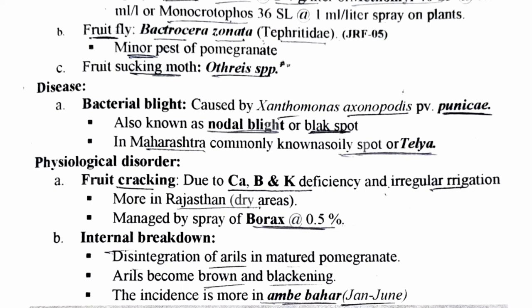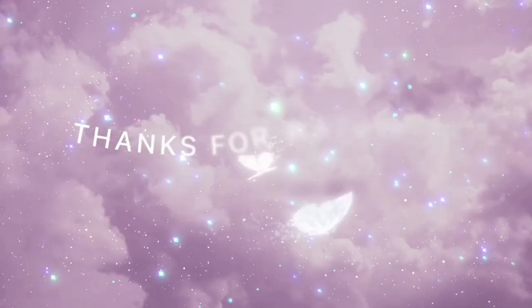Internal breakdown: the arils disintegrate in mature pomegranates — the arils turn brown and black. This disorder is most common in the Ambe bahaar season, i.e., the January-to-June period when flowering is in January-February and harvesting is in June-August — that season is most prone to internal breakdown. So that's it about pomegranate.